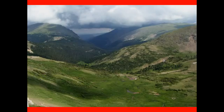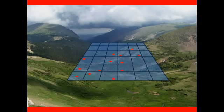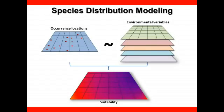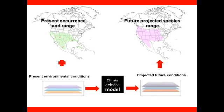Most distribution models share a common general approach. Known species occurrence locations are identified on a landscape. The landscape or study area is then divided into grid cells. A model can now be constructed which uses either occupied cells alone or both the occupied and unoccupied cells as the dependent variable and a set of environmental conditions as the independent variables to determine the predicted suitability of each location in the landscape. The suitability of the landscape can be predicted into the future under changed environmental conditions including scenarios of changing climate.